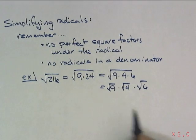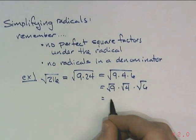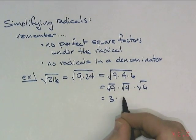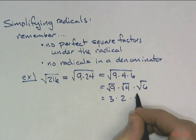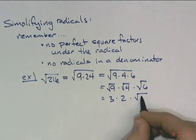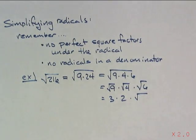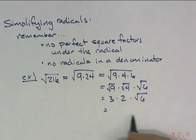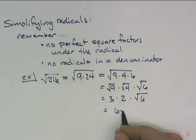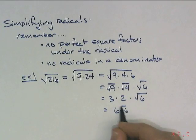The square root of 9 is 3, the square root of 4 is 2, and the square root of 6 cannot be simplified because it's 3 times 2. So this would all simplify to 6 root 6.